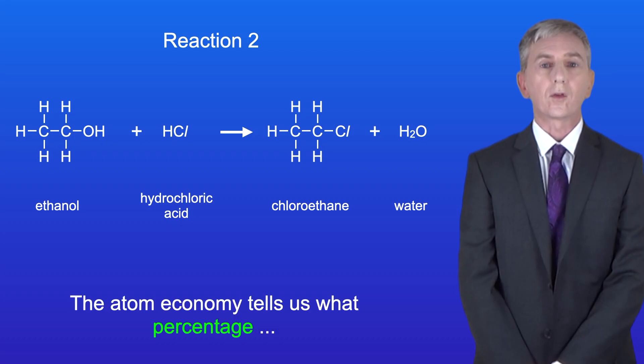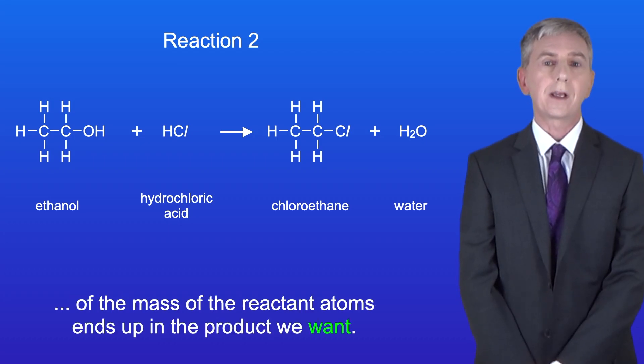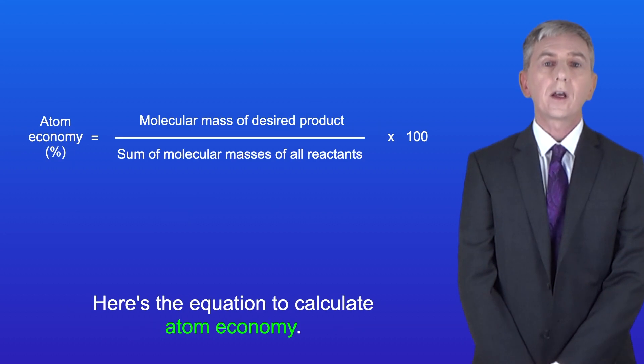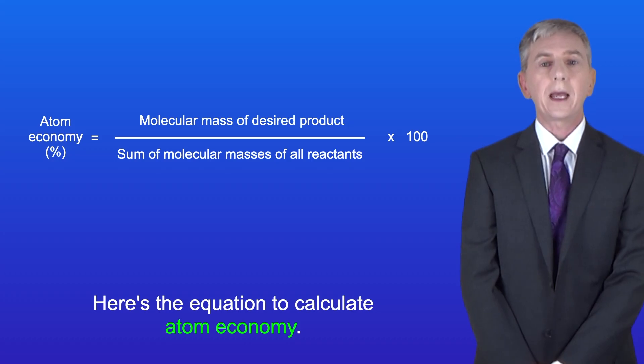Now the atom economy tells us what percentage of the mass of the reactant atoms ends up in the product we want. Here's the equation to calculate atom economy: atom economy equals the molecular mass of desired product divided by the sum of the molecular masses of all reactants multiplied by 100.